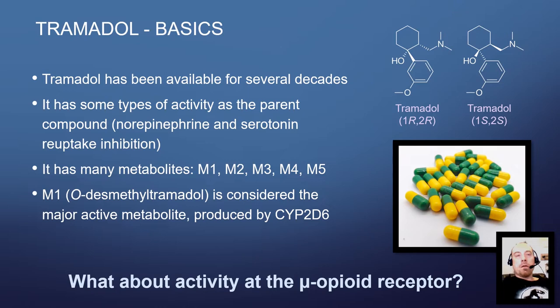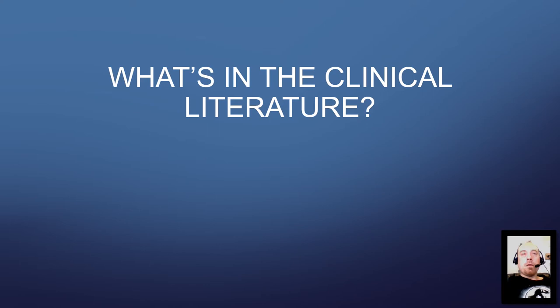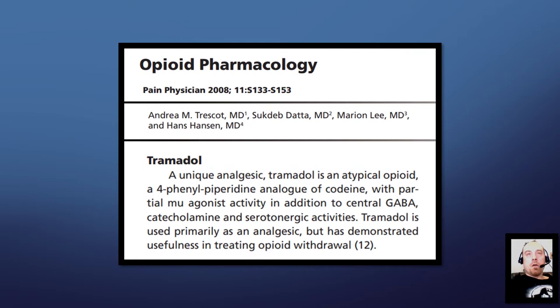So what about activity at the mu opioid receptor? I wanted to start with what I saw in the clinical literature. At least two of these sources are clinical, and one is probably more of a basic science journal. This is just scratching the surface of what I found — if you look all over the literature, you see so many references to tramadol being a partial agonist. These are just a few examples.